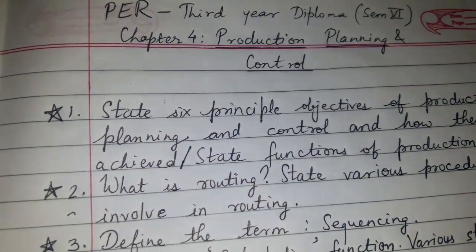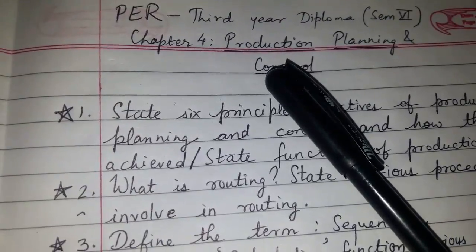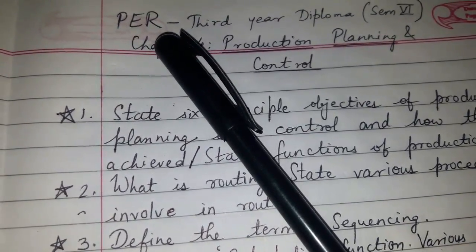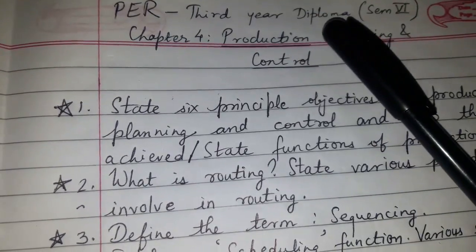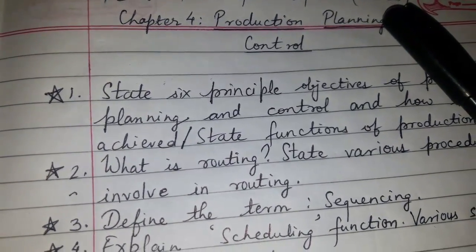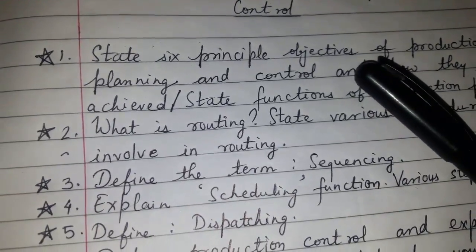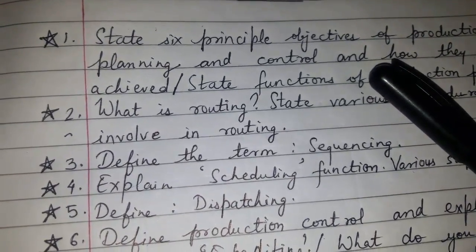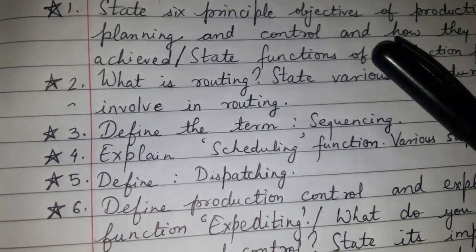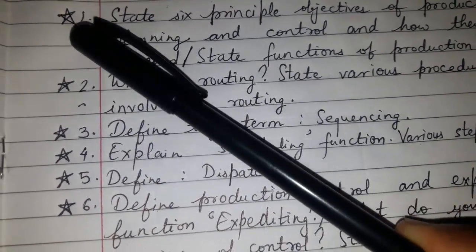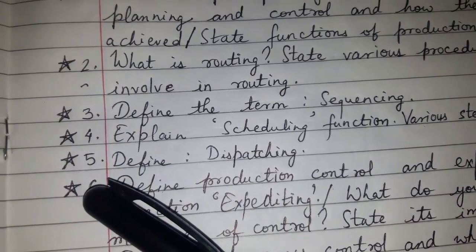Today's topic of discussion is Chapter 4: Production Planning and Control for the subject PER, that is Production Engineering and Robotics, for third year diploma semester 6. The questions which are likely to be asked from this chapter are listed here.